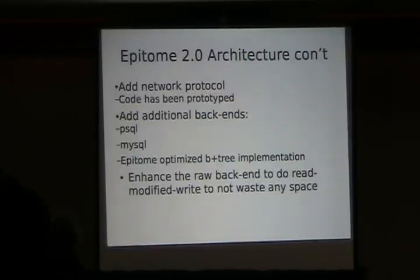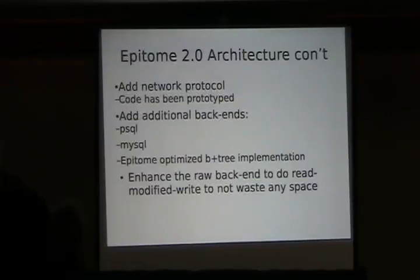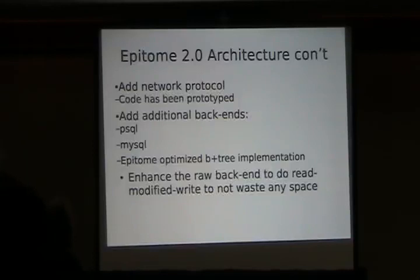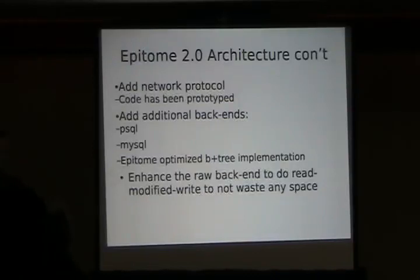One thing I need to do on the raw backend is I'm still wasting some space. When I write an uneven block size — say I'm writing 6,300 bytes that don't fit nicely in 512-byte chunks — what I want to do is read the data from the last block that was written to fill up the remaining bytes, and then write the rest to the next block, so you don't waste any space on disk at all. In other words, you could almost get nearly the whole capacity of the disk for your compressed chunks.